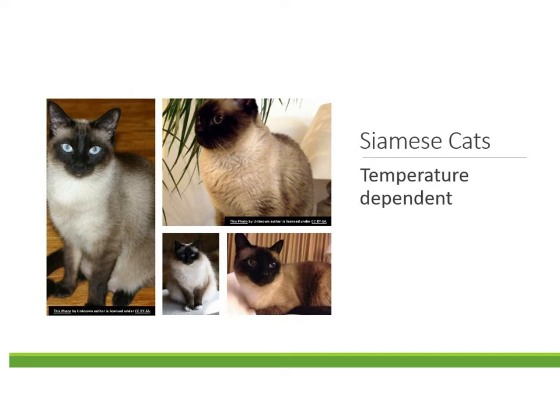For humans, a lot of environmental factors help determine our phenotype too — things like what you're exposed to, such as radiation, your diet, or your lifestyle. Many people can carry genes for things like cancer, but it doesn't mean you're going to get it. There are a lot of outside factors that will determine if you'll ever actually show a phenotype.